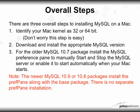There are three overall steps to installing MySQL on a Mac. First is to identify your Mac kernel as 32 or 64-bit. Second is to download and install the appropriate MySQL version. Third, for the older MySQL 10.7 package for Lion, install the MySQL preference pane to manually start and stop the MySQL server or enable it to start automatically. Note the newer MySQL 10.9 or 10.8 packages install the preference pane along with the base package, so there's no separate preference pane installation. I'll cover both options.